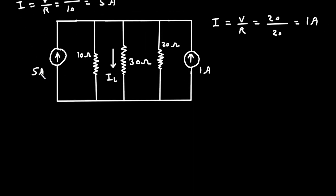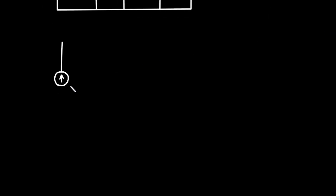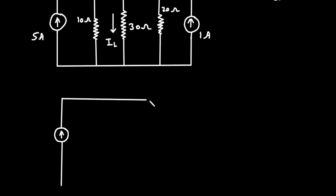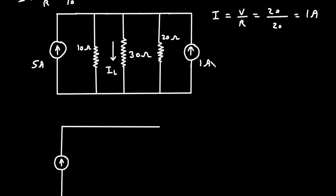Now this 5 ampere current direction and this 1 ampere current direction are the same — that is upward. So we will add them. The resultant is 5 ampere plus 1 ampere, which equals 6 ampere in the upward direction.